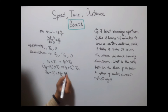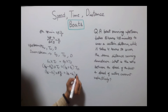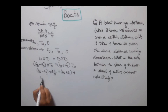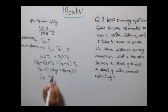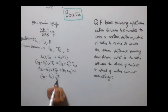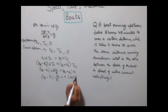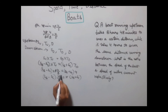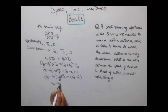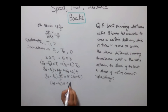So (SB minus SC) × (8 and 4/5) equals (SB plus SC) × 4. This gives (SB minus SC) × 44/5 equals 4 × (SB plus SC). Cancelling and simplifying: (SB minus SC) × 11 equals 5 × (SB plus SC).